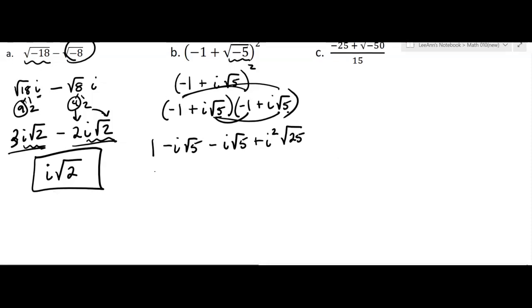All right, how does that simplify? 1, can I combine these? I can. So minus 2i square root 5. And then I'm going to have, okay, that i squared is going to be a negative 1, right? Minus 1, and then the square root of 25 is going to be 5.